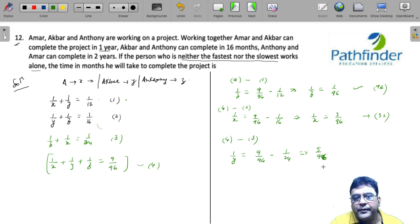So whose rate is in between? So here we have Anthony who is the slowest worker. And here we have Akbar as the fastest worker. So in between is Amar and he takes 32 days. Actually, you could have easily found out who was neither the fastest nor the slowest.